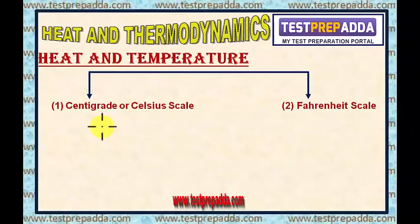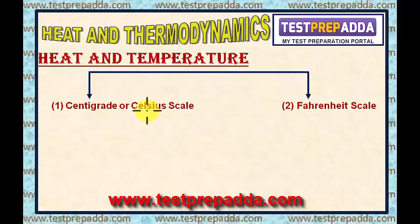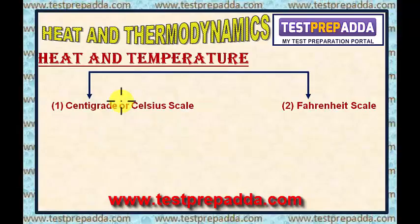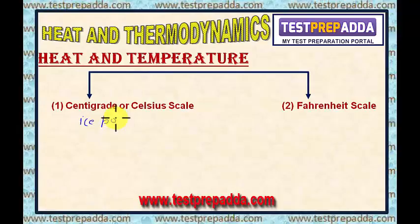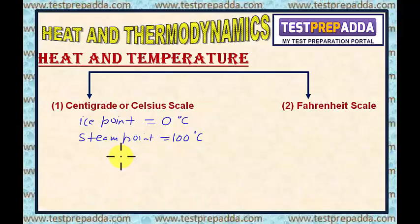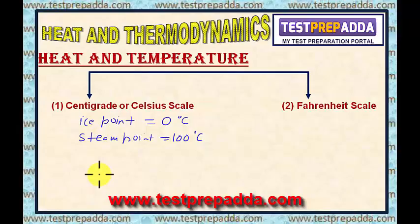Dear students, there are two famous scales: centigrade or Celsius scale, and Fahrenheit scale. For a scale, we require two reference points — ice point and steam point. For the Celsius scale, the ice point is taken as 0°C and the steam point is taken as 100°C. The length of the mercury column between these two points is divided equally into 100 parts.